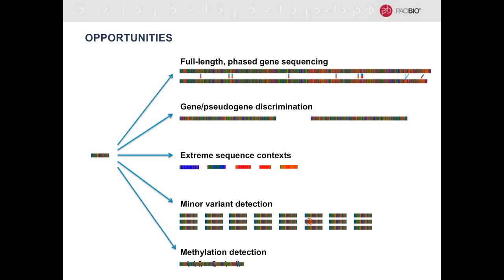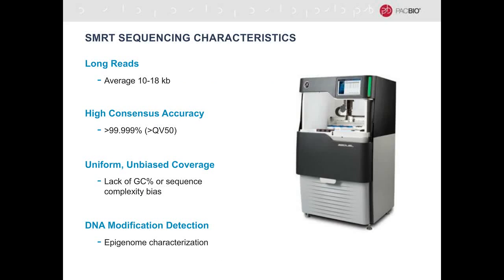I'd like to give some examples of where PacBio sequencing has been used to get much better insight into gene sequencing. Briefly about PacBio sequencing: the different performance characteristics of single molecule real time sequencing include very long reads coupled with very high consensus accuracy, uniform unbiased coverage regardless of GC percentage, high quality data, and the ability to determine DNA modification. The combination of these first three enables addressing the dead zones that currently exist in NGS or Sanger sequencing.